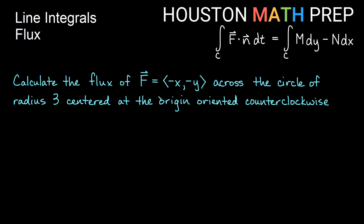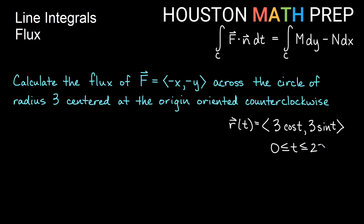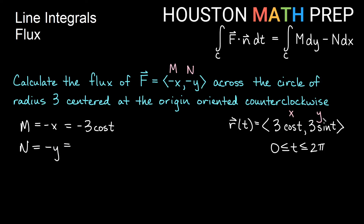Let's look at one more example with a different field but the exact same path. r of t is 3 cosine t, 3 sine t, with t from 0 to 2π. Our vector field is negative x comma negative y. If m is negative x and x is 3 cosine t, then m is negative 3 cosine t. If n is negative y and y is 3 sine t, then n is negative 3 sine t. dx is negative 3 sine t dt and dy is 3 cosine t dt.